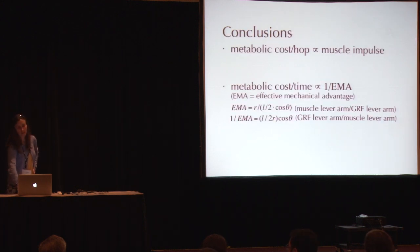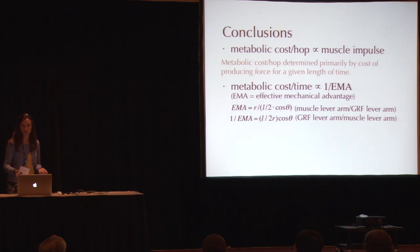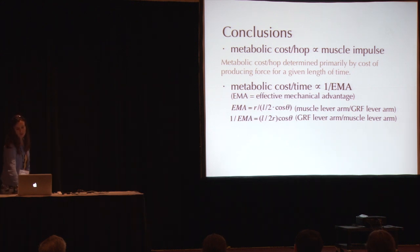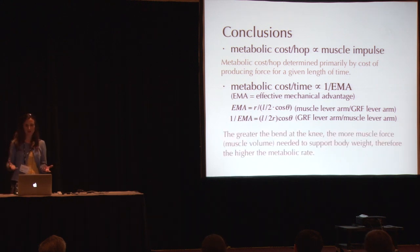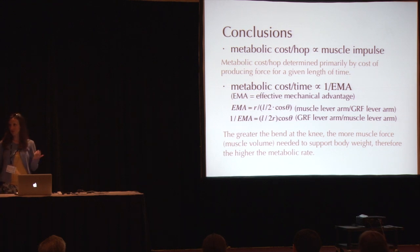In conclusion, metabolic cost per hop is proportional to muscle impulse — primarily determined by the cost of producing force for a given length of time. Metabolic cost per time is proportional to one over the effective mechanical advantage, meaning the greater the bend in the knee, the more muscle force or muscle volume is needed to support body weight, and therefore the higher the metabolic rate.